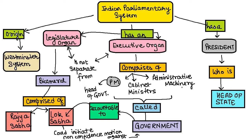We have studied that India has a parliamentary system of government and the union parliament is the supreme legislative body in the country. Indian parliament is a bicameral legislature, meaning it has two houses — Rajya Sabha and Lok Sabha. Parliament has three organs: legislature, executive, and president, and the legislature is bicameral.